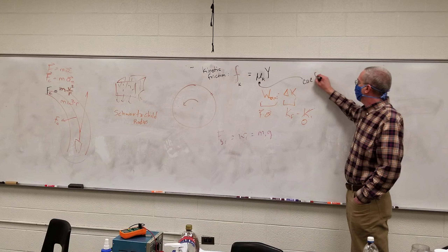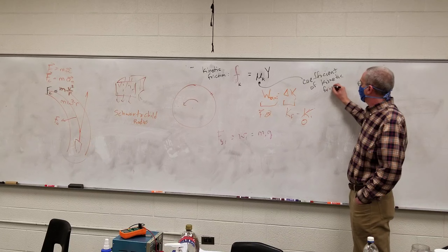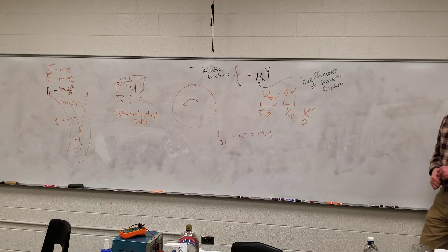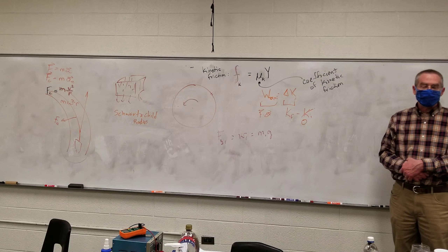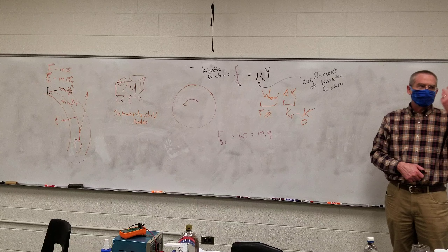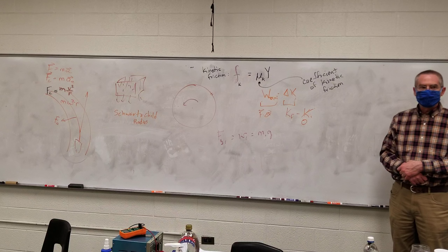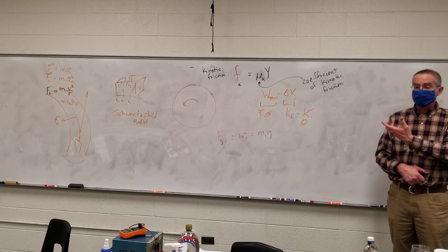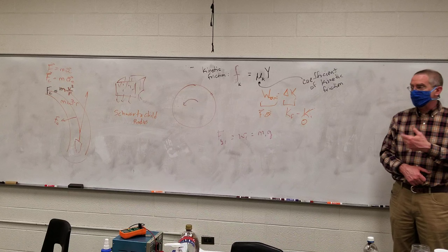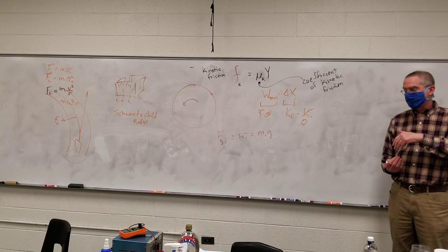This mu sub k is the coefficient of kinetic friction. It is found experimentally — it's not derived. You look it up; if you want to know the value for rubber and asphalt, you type in 'coefficient of kinetic friction asphalt rubber' and find it in a table. For asphalt and rubber it's around 0.8. It has no units — it's simply the ratio of friction force while something is sliding divided by the normal force at that surface.